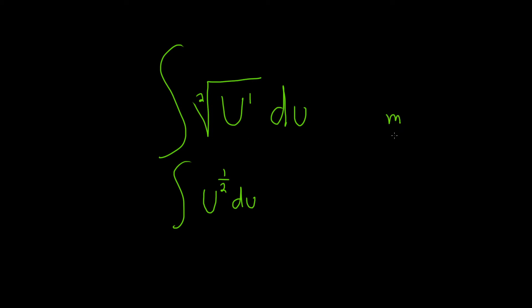Square roots can always be written in that way. In general, if you had something like the nth root of u to the m, this would be m over n. It's always just this one over this one. So in this case, it's 1 over 2.